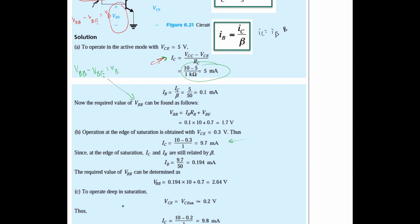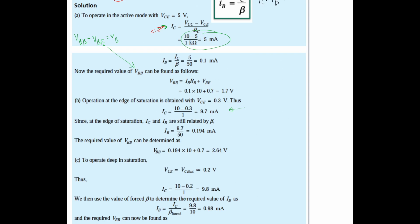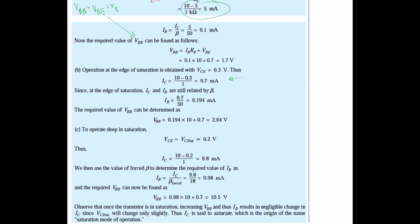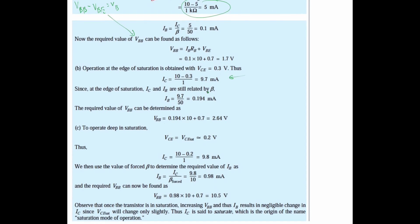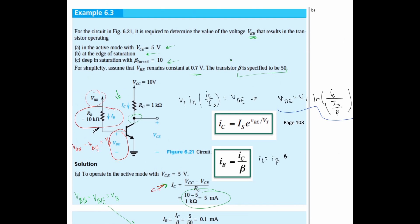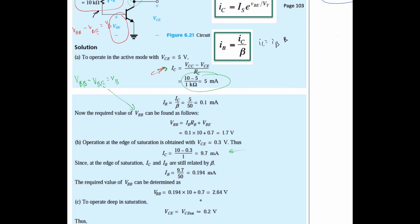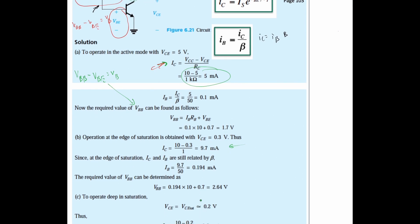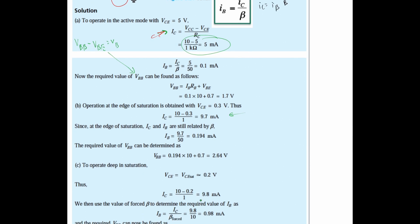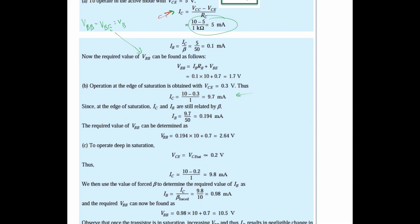We're going to do the same thing for our deep in saturation, just changing the values for our IC. The first one is 1.7 volts for the active mode. Next we have 2.64 volts for the edge of saturation. Then we have 10.5 volts to operate deep in saturation, which we can see is getting greater every single time.